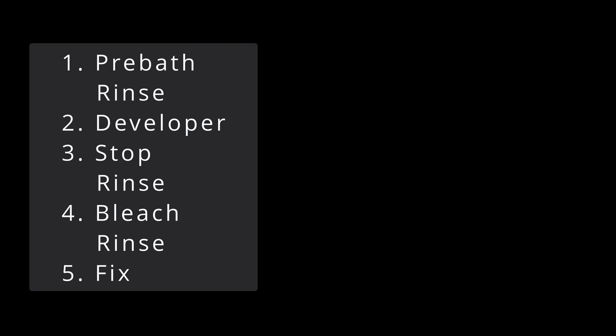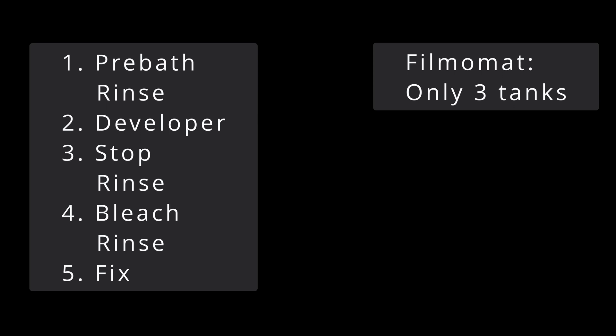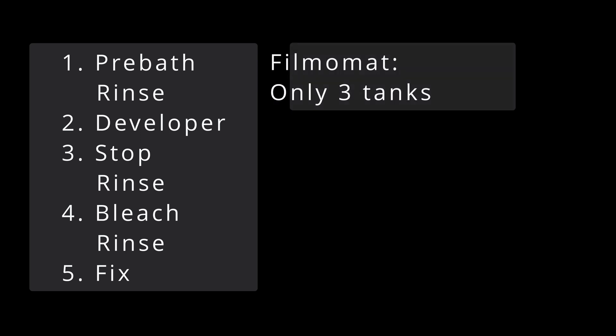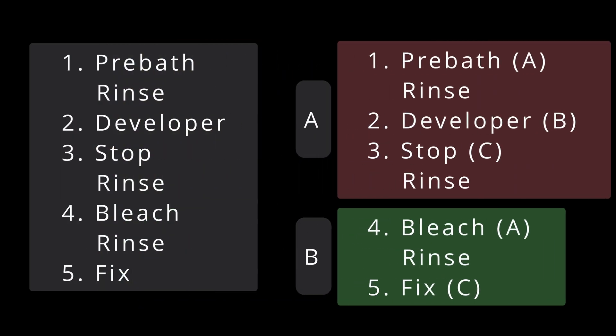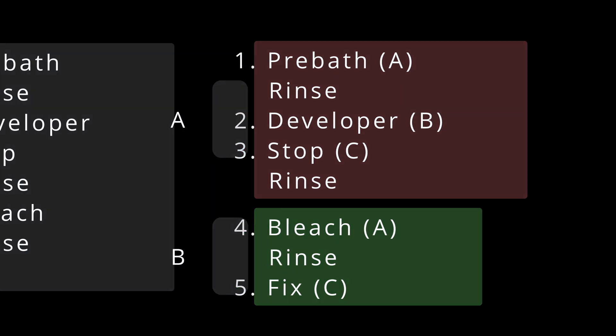The second issue, the amount of steps. The Filmomart has three chemical tanks, but the ECN2 process requires five different baths. Because of this, we will split the ECN2 process into two parts. In the first part, we will do the pre-bath, developer and stop. And in the second part, we will then do bleach and fix. In between, we will just exchange the fluids in the Filmomart tanks.